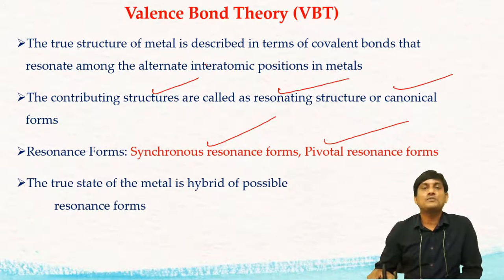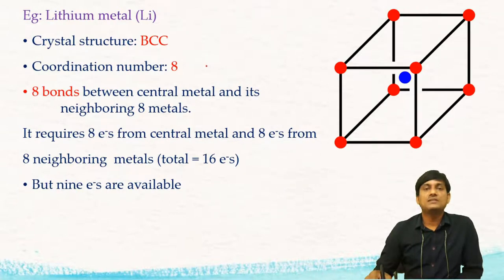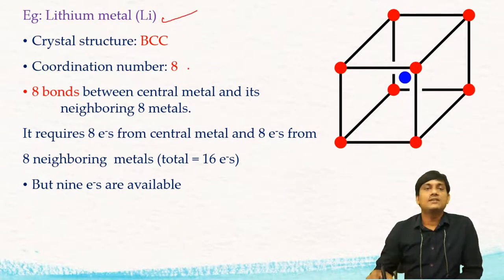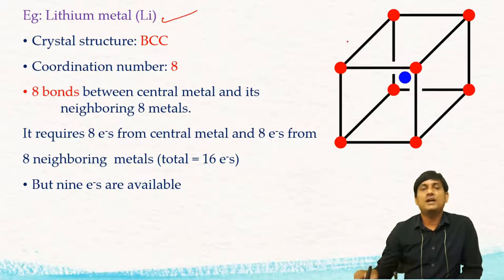The true structure of a metal is a hybrid of all the possible resonating structures. Let us take a simple metal — lithium. We know that lithium crystallizes in body-centered cubic. In body-centered cubic, at the center of the body we have one lithium atom, and at the eight corners of the cube we have eight lithium atoms. The center lithium atom is surrounded by eight nearby lithium atoms.